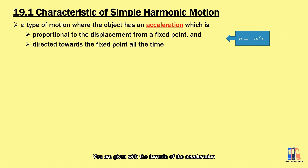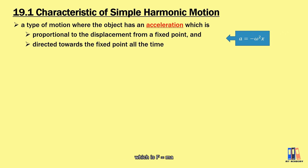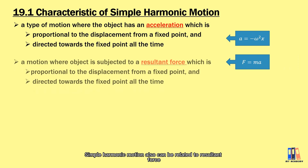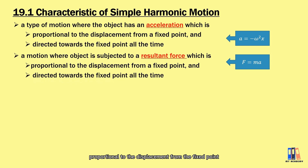You are given the formula: acceleration is equal to negative omega squared x, where omega is the angular frequency of the motion. We also have the formula of force, which is equal to ma. So simple harmonic motion can also be related to a resultant force which is proportional to the displacement from the fixed point, and it is always directed toward the fixed point.